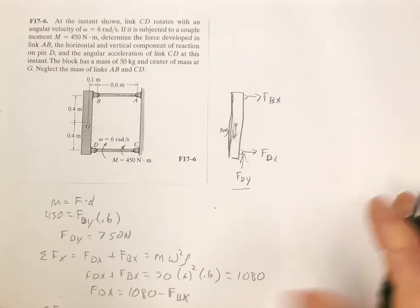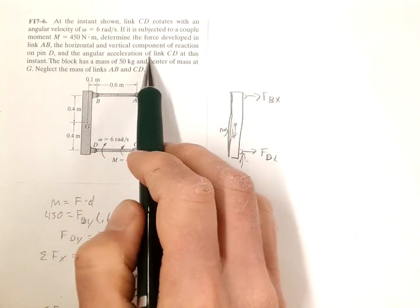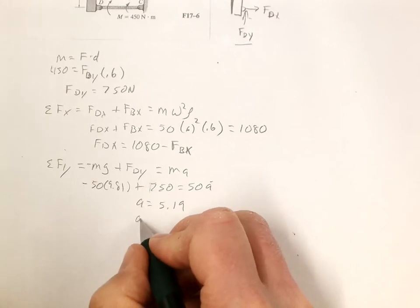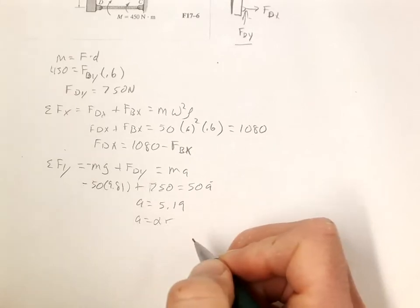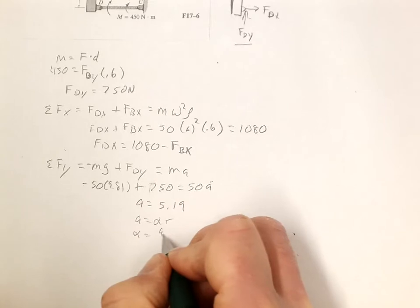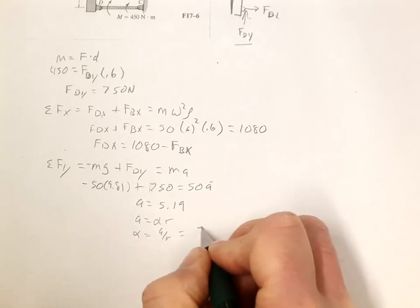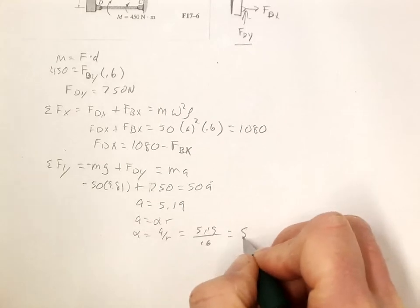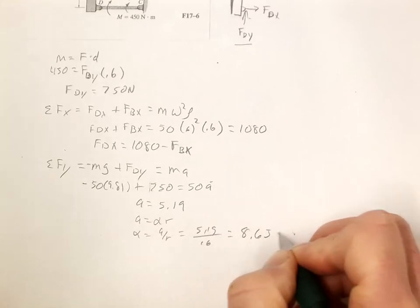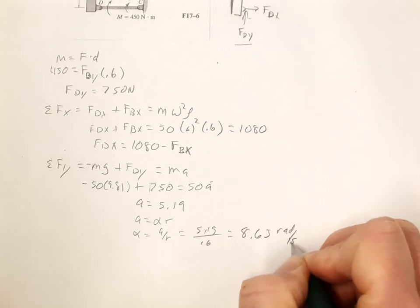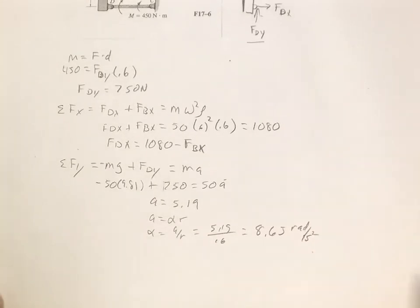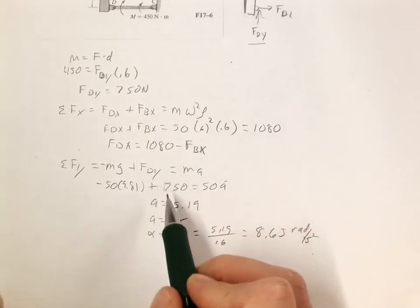Now the question asks for the angular acceleration of CD. So we have A, and A equals alpha R. So alpha is equal to A over R, which is equal to 5.19 over 0.6, which is equal to 8.65 radians per second squared. So we solve for that.